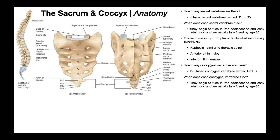Which begs the question: when does each sacral vertebra fuse with the others? The answer is they begin to fuse in late adolescence and early adulthood and are usually fully fused by the age of 30. The sacral segments, when you're born and even as a kid, are not actually fully fused yet — they don't fuse fully until the age of 30.